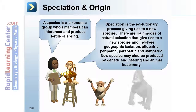There are four modes of natural selection that give rise to a new species and involve geographic isolation. These include allopatric, peripatric, parapatric, and sympatric.